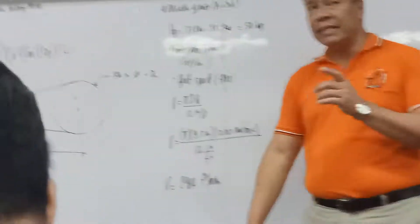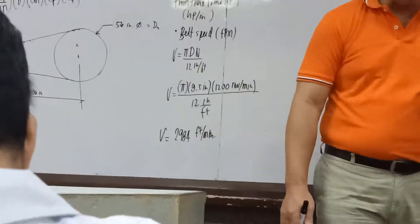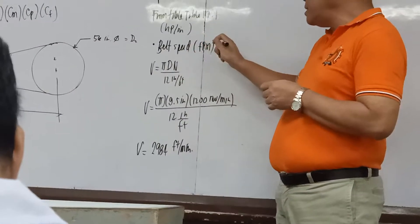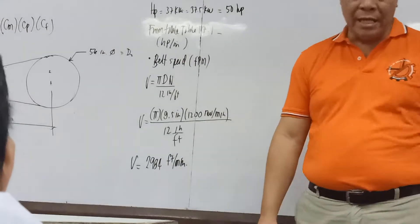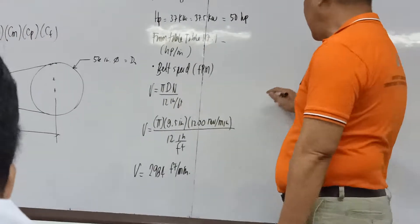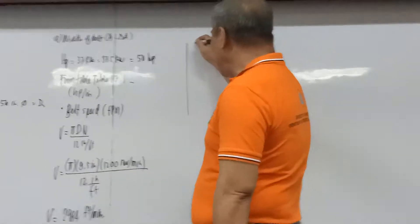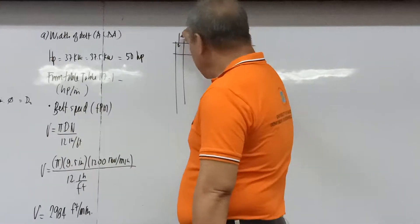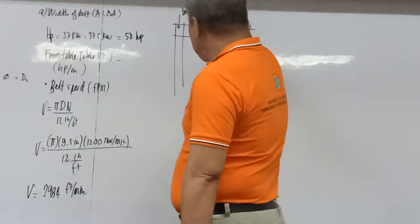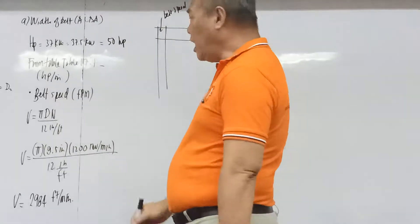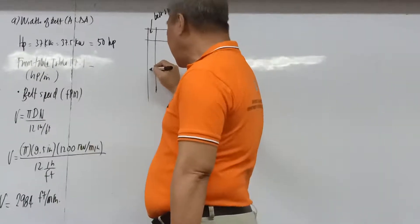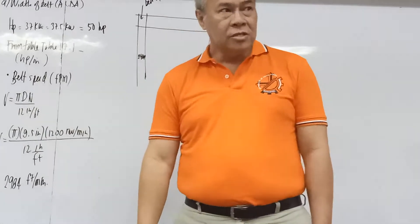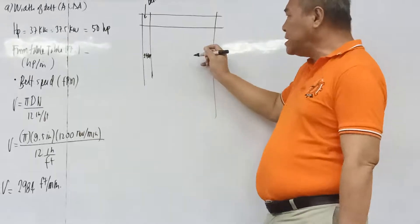We are using a medium double leather belt. The table is subdivided by type of service: light, medium, and heavy. We select 'medium' service, then under medium, we look for 'double' leather belt (as opposed to single or triple ply), and intersect it with the belt speed column.